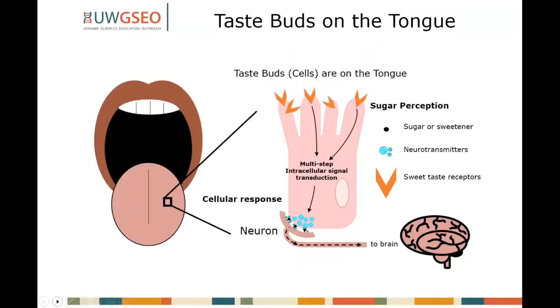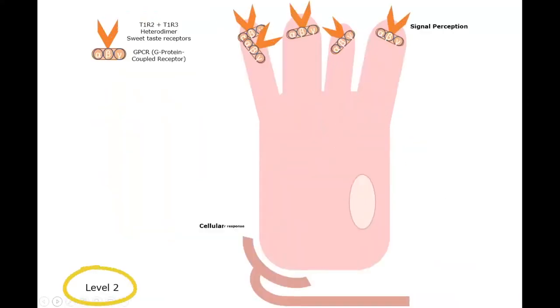Now, if you're in an AP class or an IB class, you might need more information. The signal receptors are heterodimers. These sweet taste receptors are a combination of T1R2 and T1R3. You have lots of TR taste receptors and different combinations help you taste different tastes, but these are the ones that work for sweet taste.